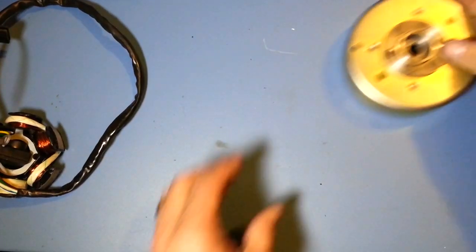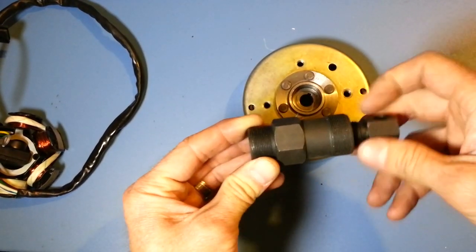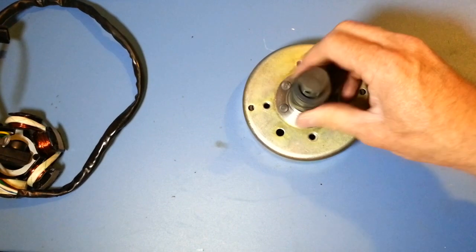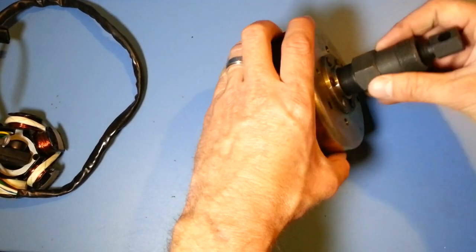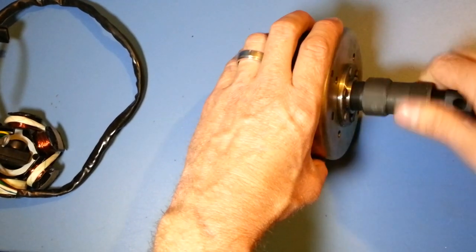If you're trying to remove this magneto, you'll need this tool. This is a magneto or rotor puller. It screws in like this. You screw it all the way in, all the way in.